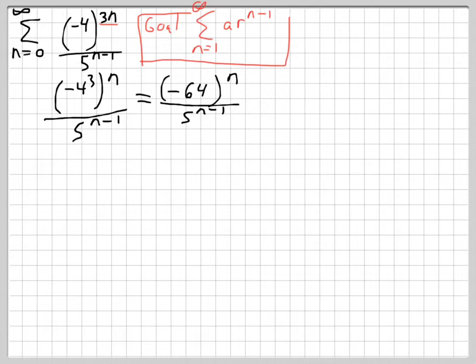Okay, so our next problem that we encounter is that this is n equals 0 and we certainly need it to be n equals 1. So what we're going to do is basically add one. We're going to add one right here. So when we add one we have to subtract one to everything else that's over here. So we have negative 64 to the n minus 1 which is what we want. We added one, we subtracted one. But over here we have 5 to the n minus 1 and we have to subtract one to that as well.